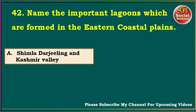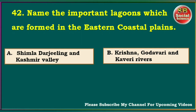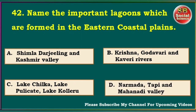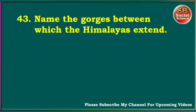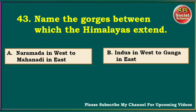Name the important lagoons which are formed in the Eastern Coastal Plains. Shimla, Darjeeling and Kashmir Valley; Krishna, Godavari and Kaveri Rivers; Lake Chilka, Lake Pulikat, Lake Koleru; Narmada, Tapti and Mahanadi Valley. The answer is Lake Chilka, Lake Pulikat and Lake Koleru.